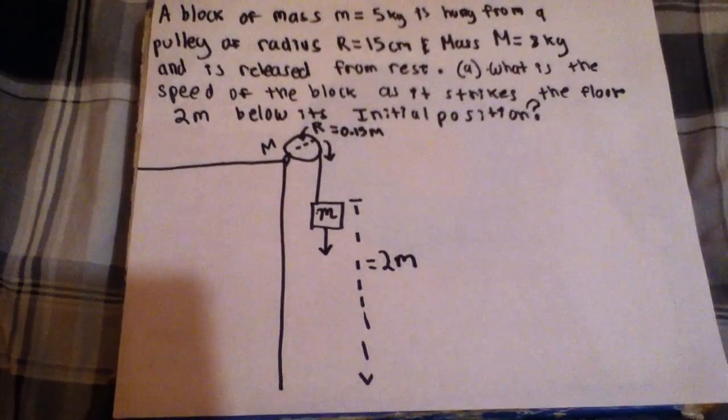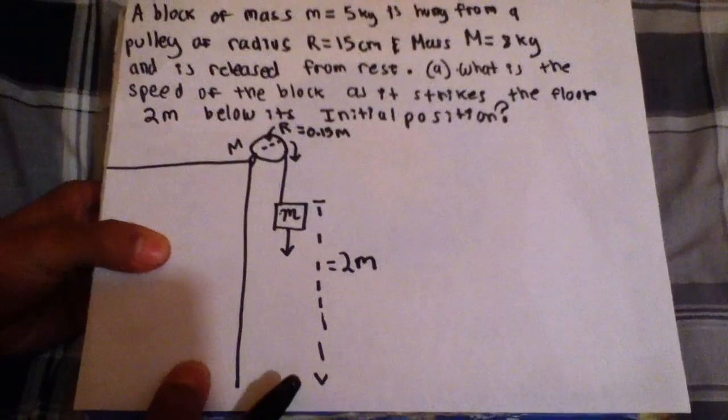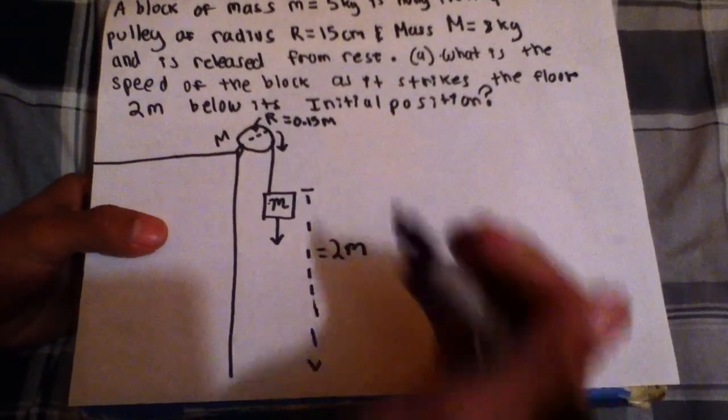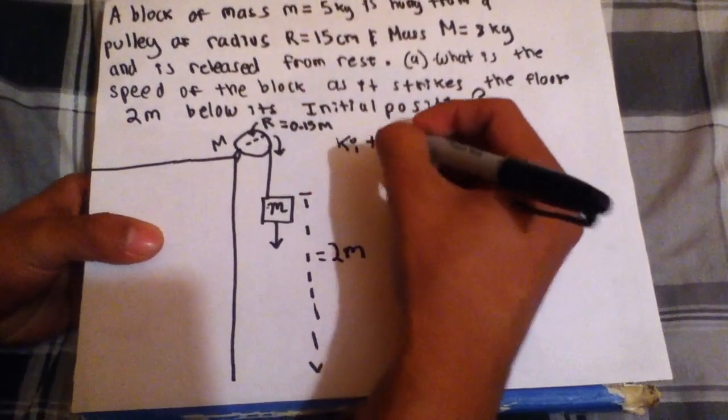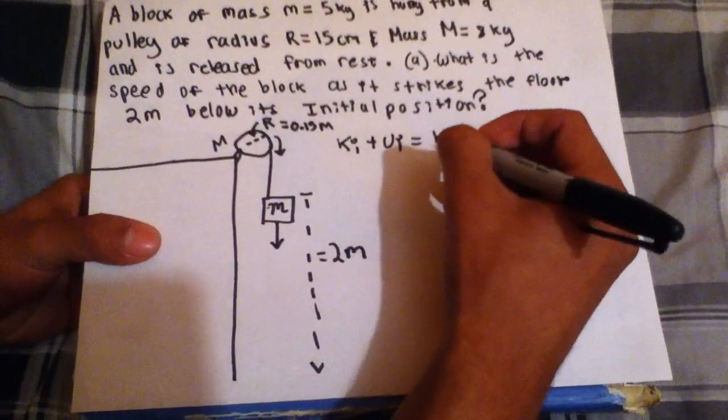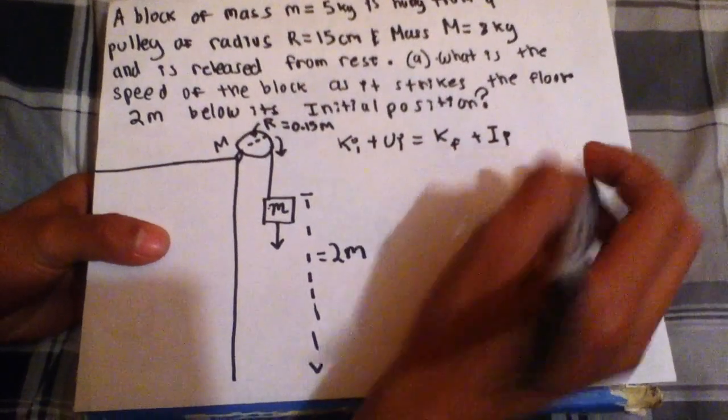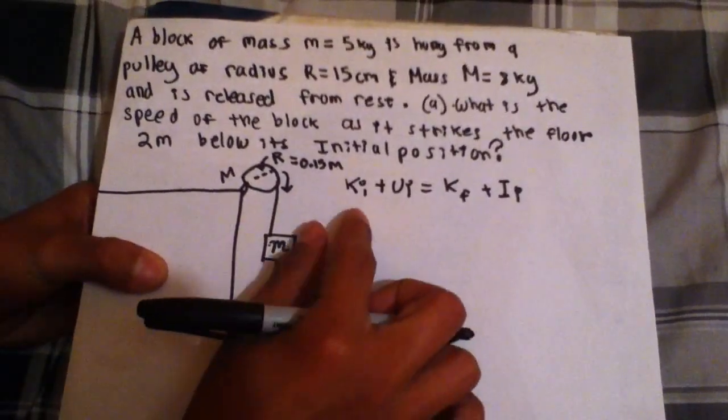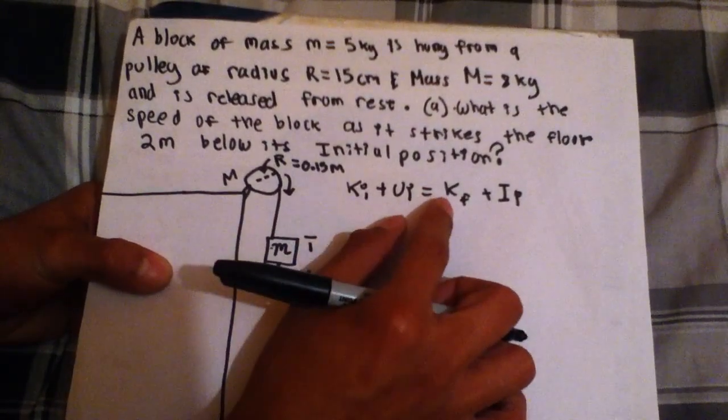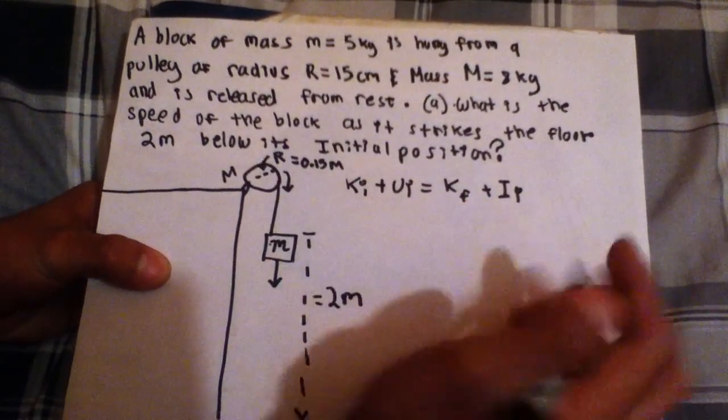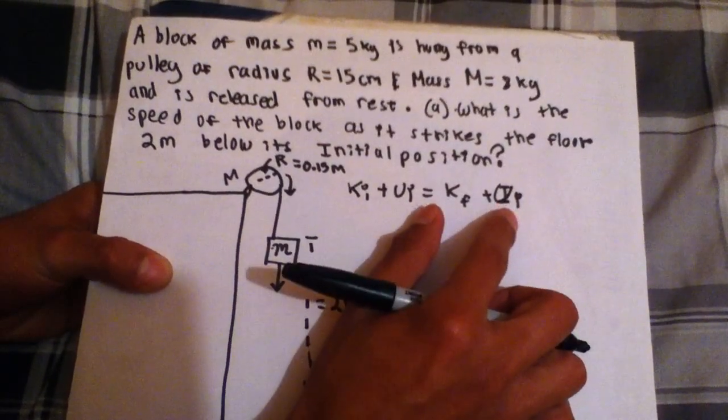So first of all, I would begin with this theorem, which is the conservation of mechanical energy. So the kinetic energy initially plus the potential energy initially is equal to the kinetic energy final and the potential energy final.